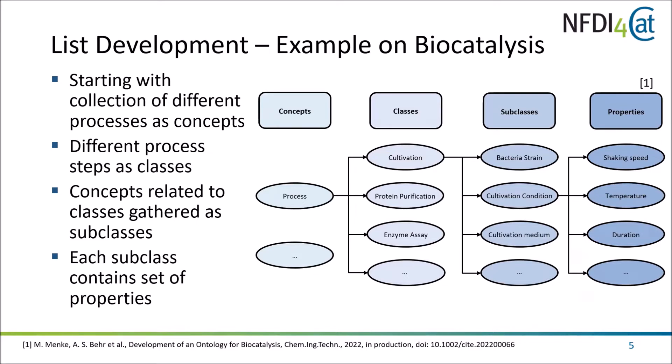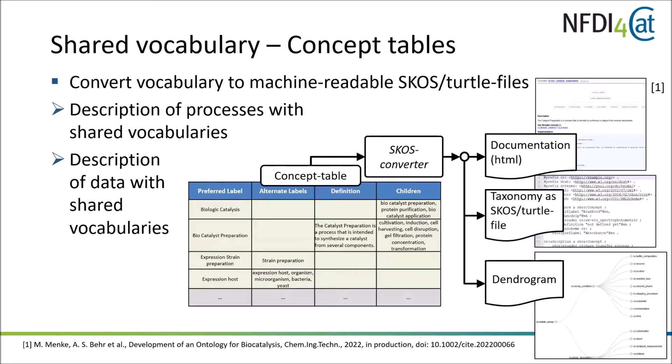We almost always came up with some kind of same properties for different processes, so we recognized something was odd — maybe we could restructure. Basically, what we try to do is gather classes with subclasses where each subclass contains a set of properties which could then later be used to describe processes relevant for, for example, doing an enzyme assay.